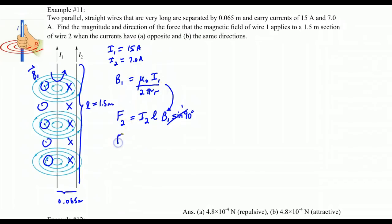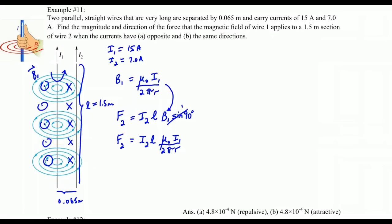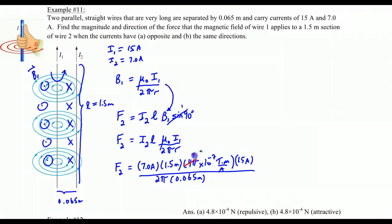Substituting, we have F₂ = I₂ × L × (μ₀I₁ / 2πr), where r is the distance from wire 1 to wire 2. Substituting all values in and doing the cancellations, we get a force of F₂ = 4.85 × 10⁻⁴ newtons.